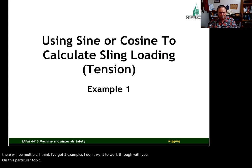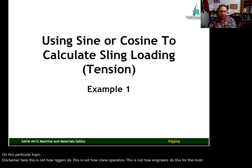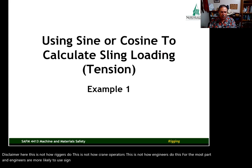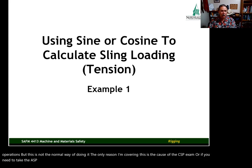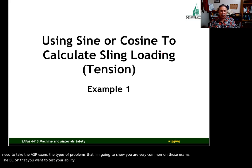Disclaimer here: This is not how riggers do this. This is not how crane operators, this is not how engineers do this for the most part. And engineers are more likely to use sine or cosine or trigonometry than anyone else who has something to do with crane operations. But this is not the normal way of doing it. The only reason I'm covering this is because of the CSP exam or if you need to take the ASP exam. The types of problems that I'm going to show you are very common on those exams. The BCSP, they want to test your ability to use basic trigonometry.